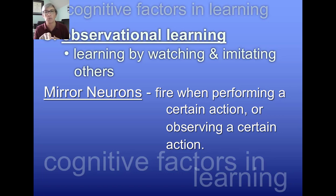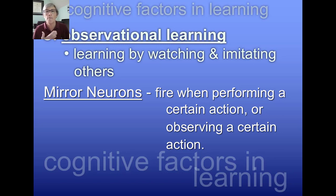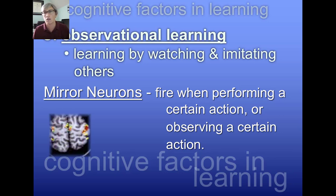I can watch you eating an ice cream cone and remember, because I've had that experience, what it's like to eat an ice cream cone. The same parts of my brain will light up even though I'm not involved in the eating. To me, that's awesome because it tells me that if I can see myself succeeding at something, it will be so because of the mirror neurons. My body and my brain already know how to do something because I've watched somebody else do it or I've seen myself do it. Mirror neurons and observational learning are super cool.